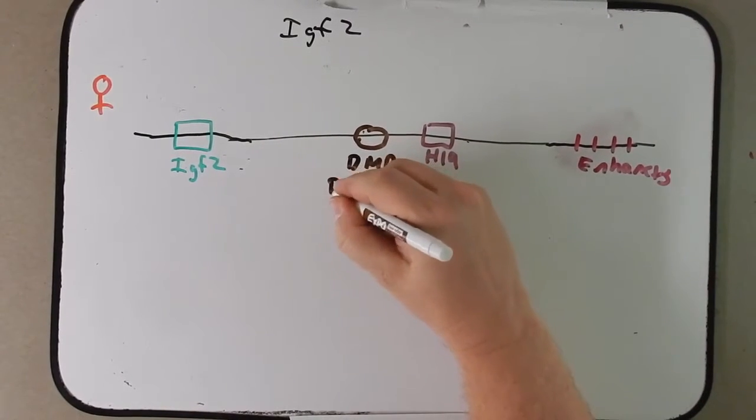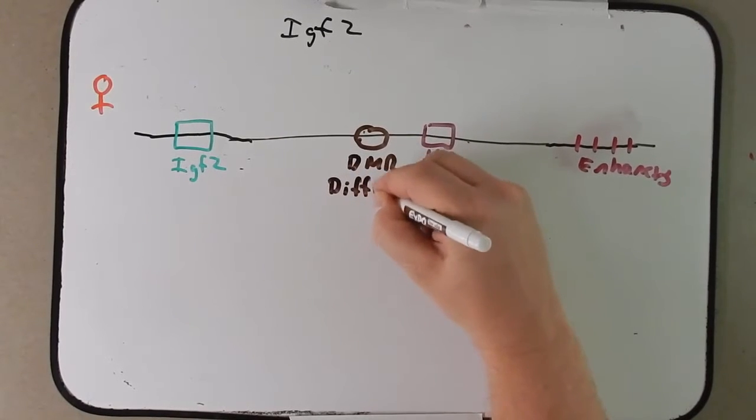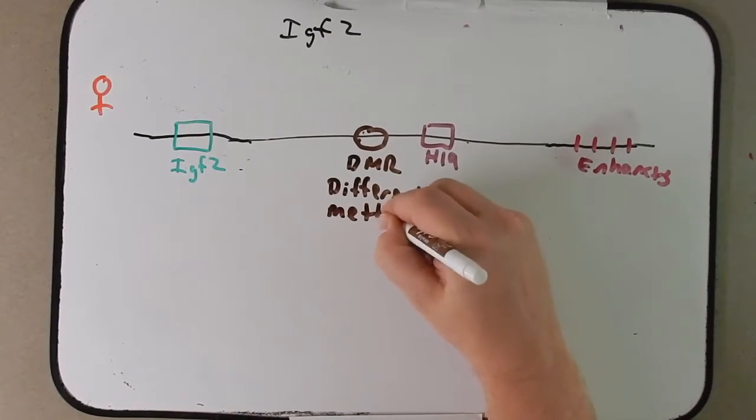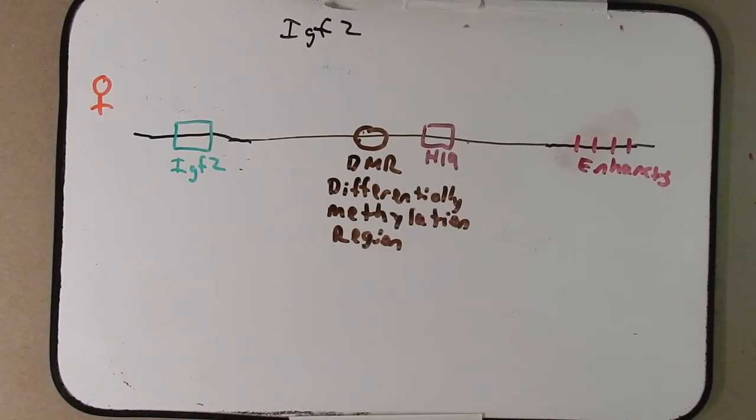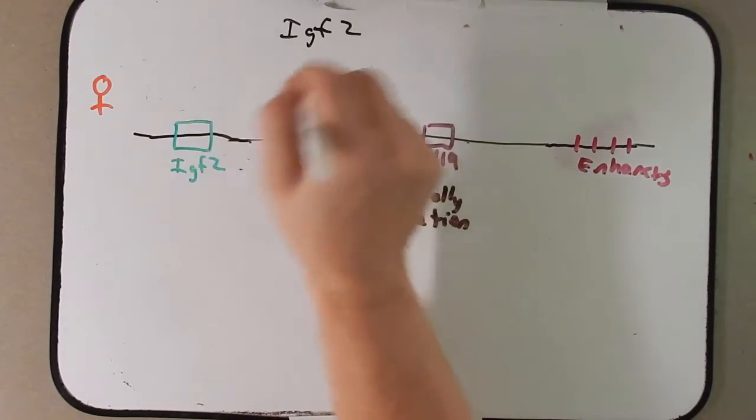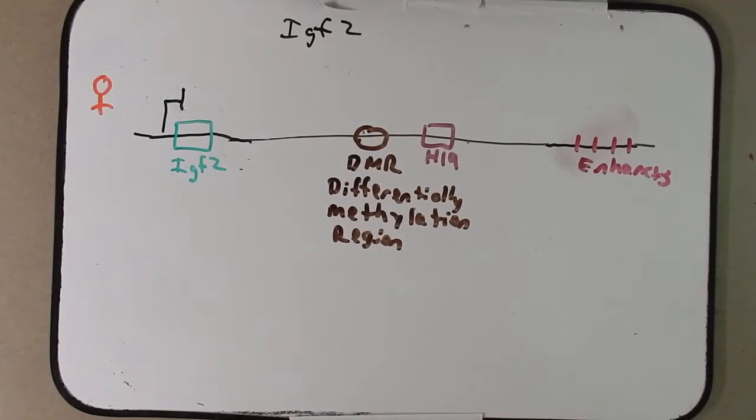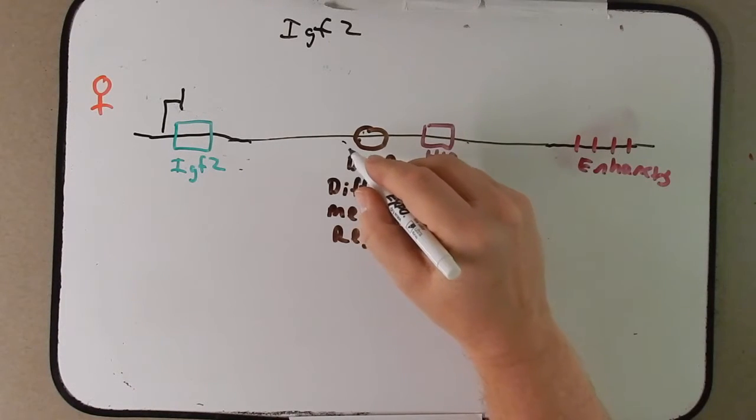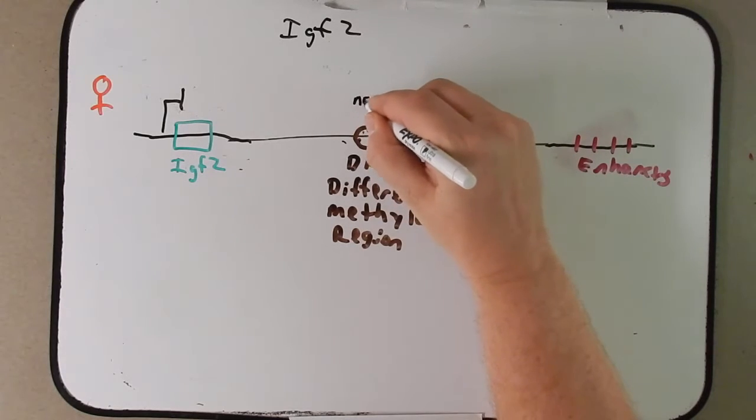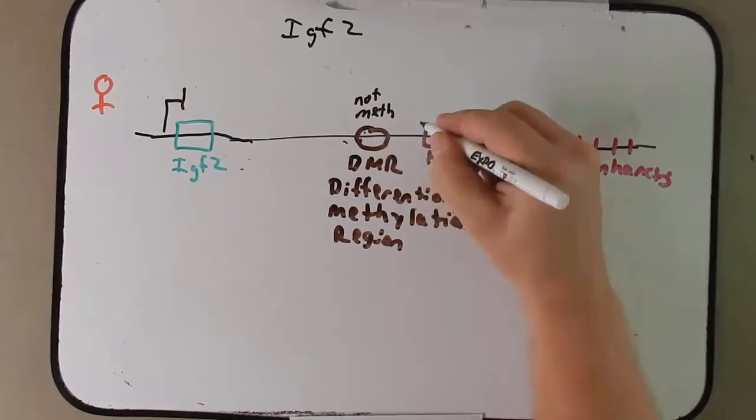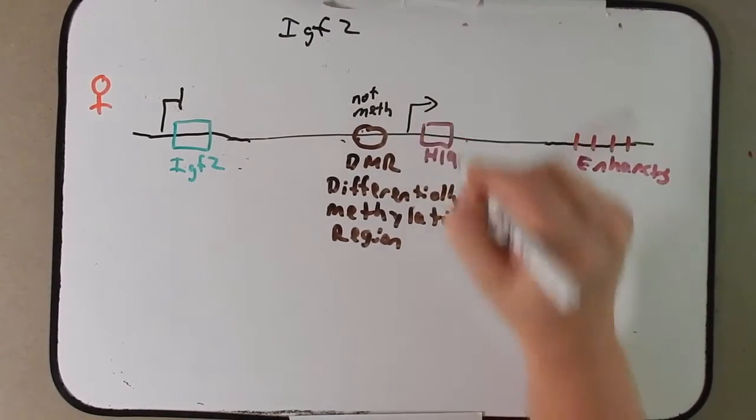DMR stands for differentially methylation region. Now you already know from the first discussion of IGF2 that IGF2 is not going to be expressed. How is it not expressed? Well, DMR here is not methylated. This allows H19 to be expressed.